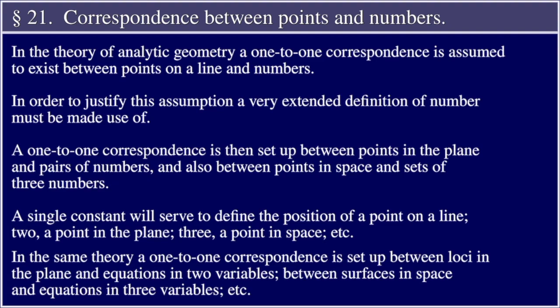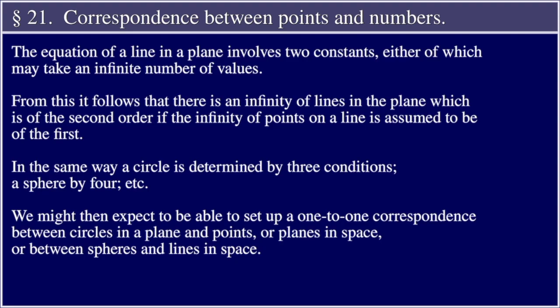In the same theory, a one-to-one correspondence is set up between loci in the plane and equations in two variables, between surfaces in space and equations in three variables, etc. The equation of a line in a plane involves two constants, either of which may take an infinite number of values. From this, it follows that there is an infinity of lines in the plane, which is of the second order if the infinity of points on a line is assumed to be of the first. In the same way, a circle is determined by three conditions, a sphere by four, etc. We might then expect to be able to set up a one-to-one correspondence between circles in a plane and points, or planes in space, or between spheres and lines in space.